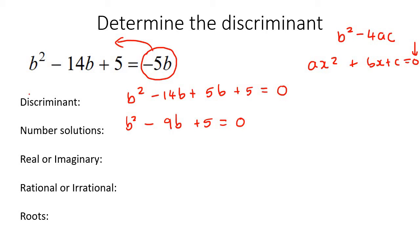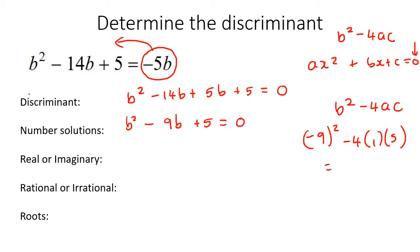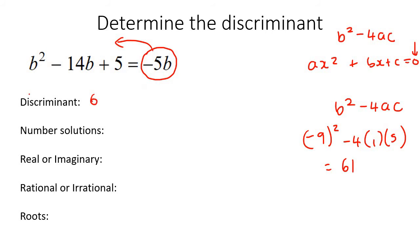The discriminant is b squared take away 4ac. So that's negative 9 in brackets, take away 4 times a which is 1, times c which is 5. And if we calculate this, we end up with 61. So our discriminant is 61 — this is where the fun begins.